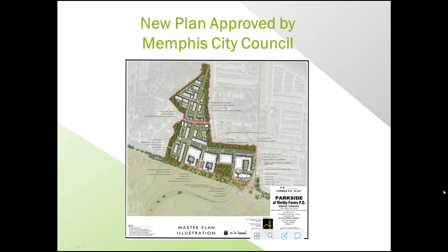So we designed a new plan. The new plan included five- to six-story mixed-use buildings — apartments, retail, hotel, and service amenities that overlooked Shelby Farms Park. And then we had four-story, three-story, and two-story buildings — but it was all apartments, retail, and hotels.